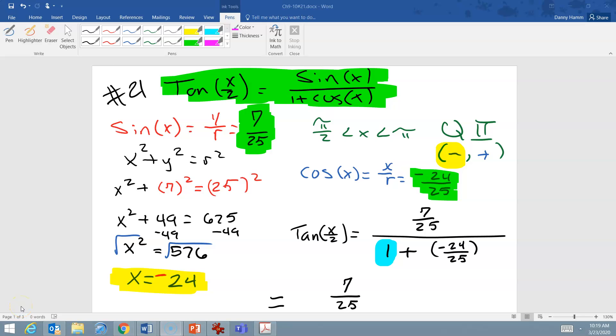Hello! Looking at number 21 from the Chapter 9 and Chapter 10 test. This one is looking at half-angle identities, and we'll be looking specifically at tangent of x over 2, or theta over 2. And specifically, it's identity. There are three identities used, but I am choosing to use sine of x over 1 plus cosine of x.